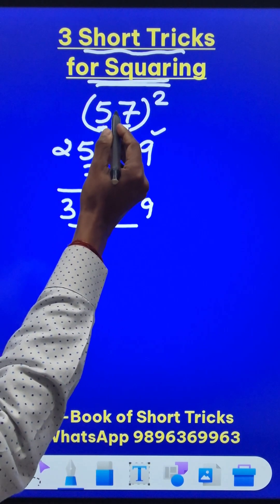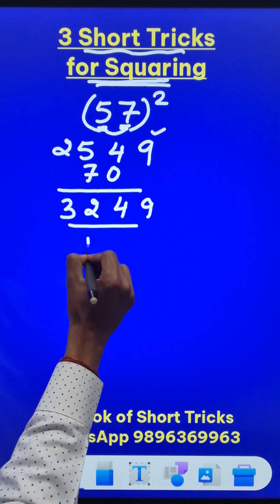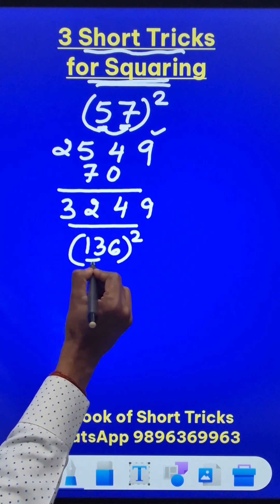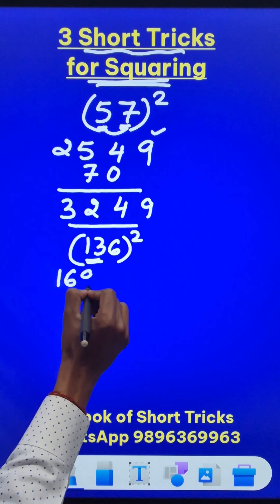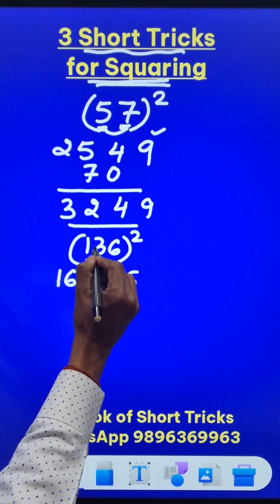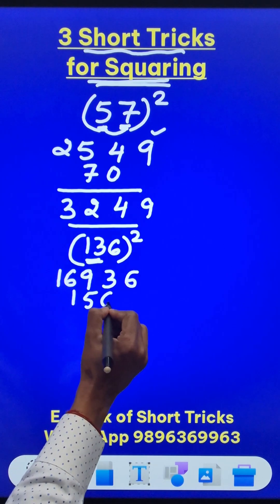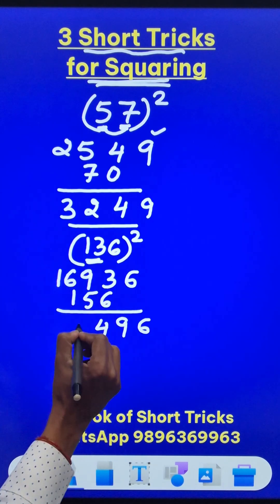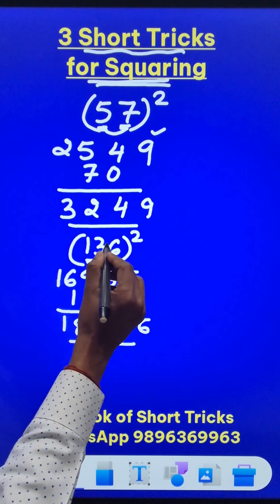Likewise if you have to do the square of 136 you can follow the same method. 13 square is 169, 6 square is 36, 13 into 6 is 78, the double of 78 is 156. So just add vertically 6, 9, 14 means 4, 1 carried 8 and 1. Here is the square of 136.